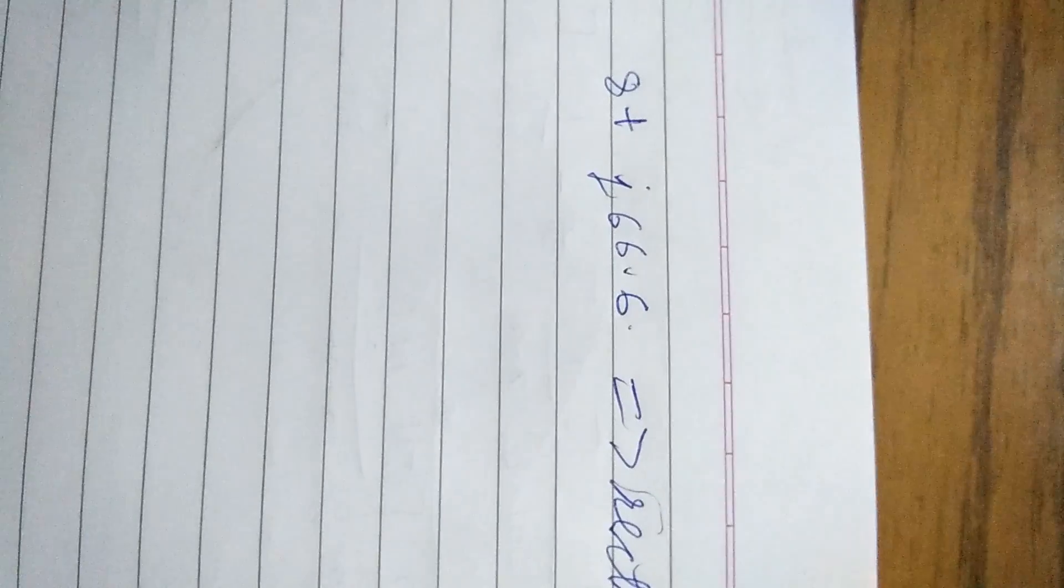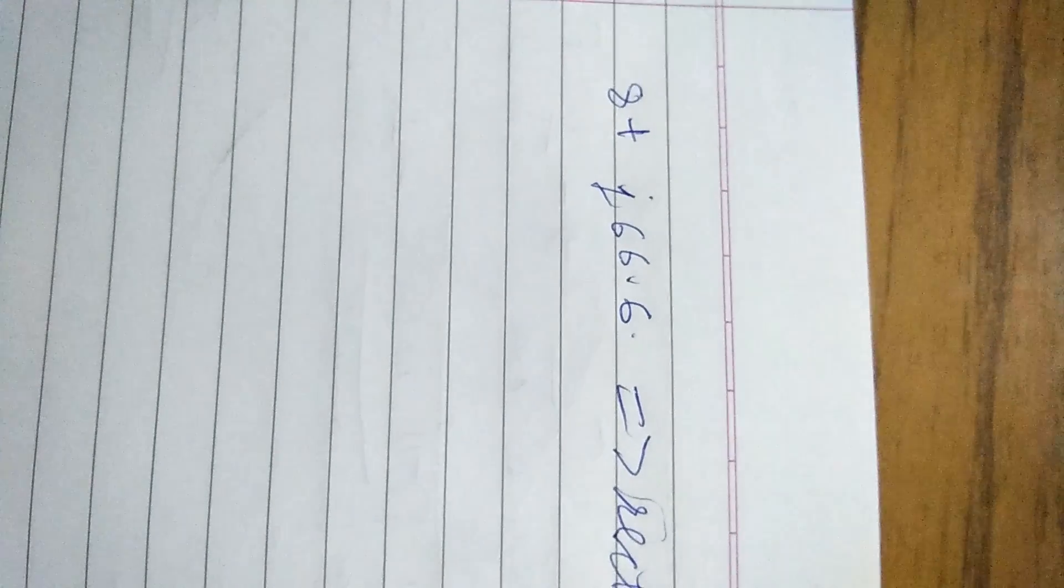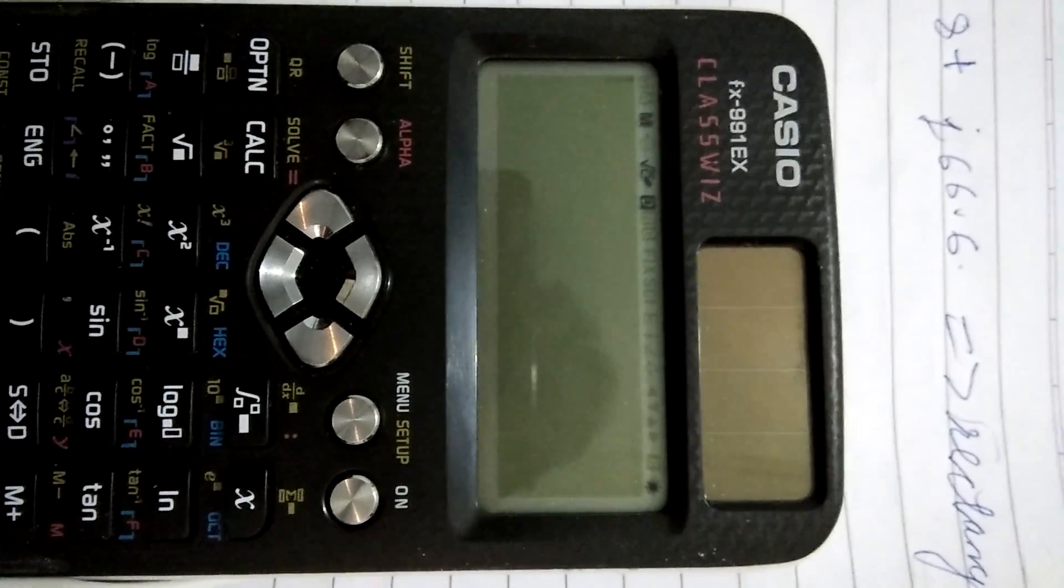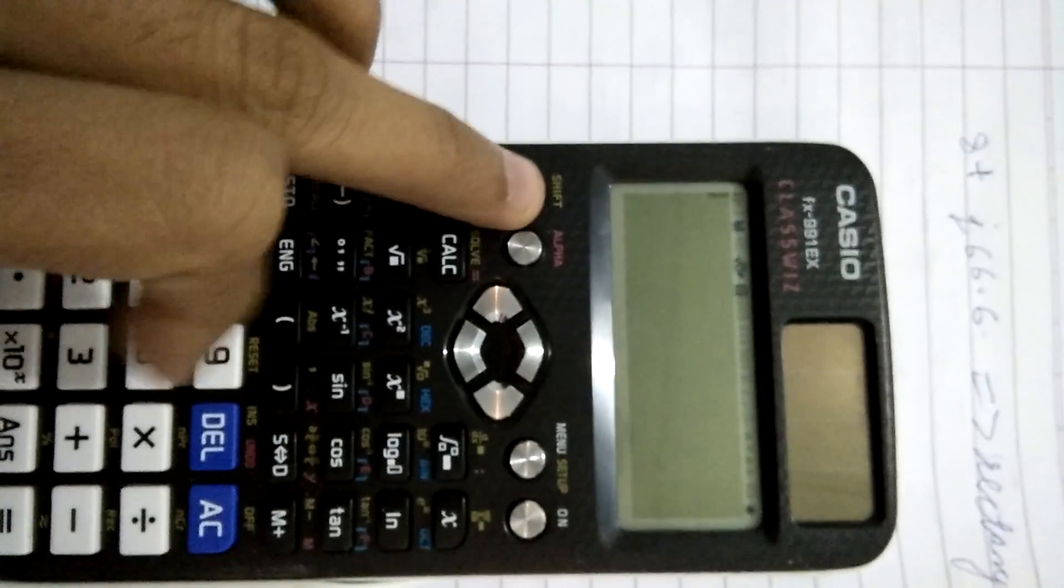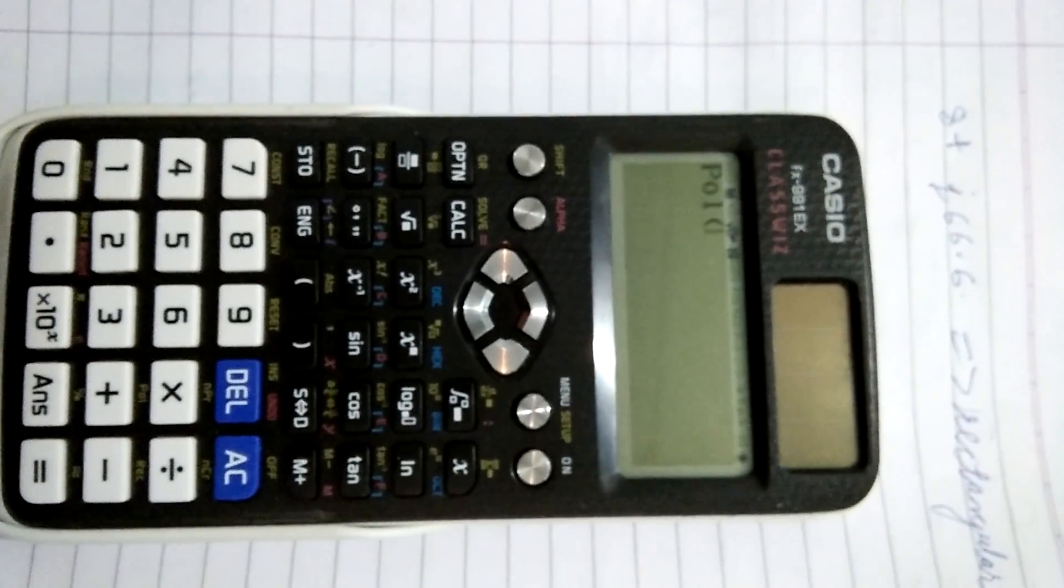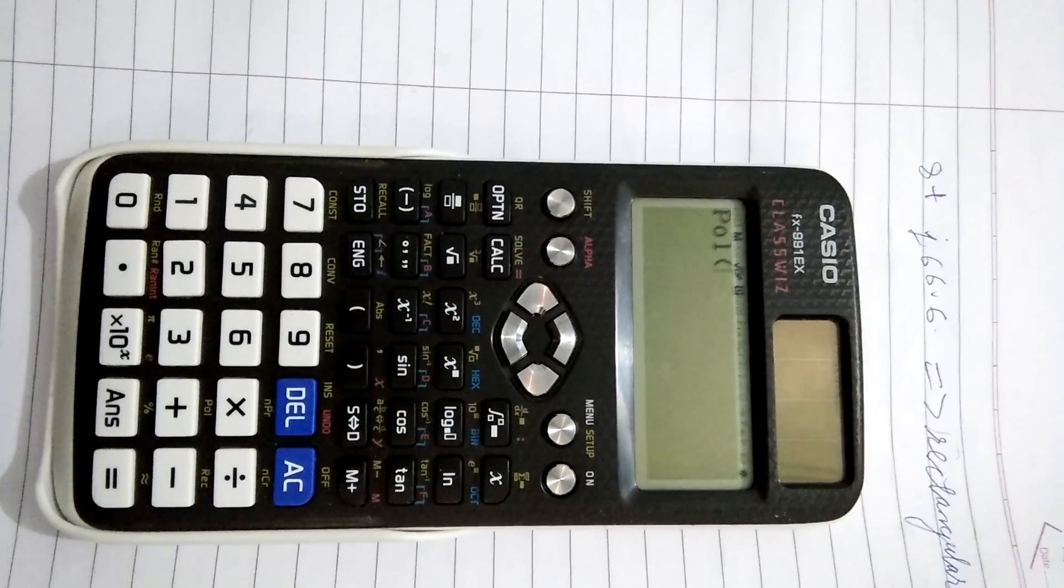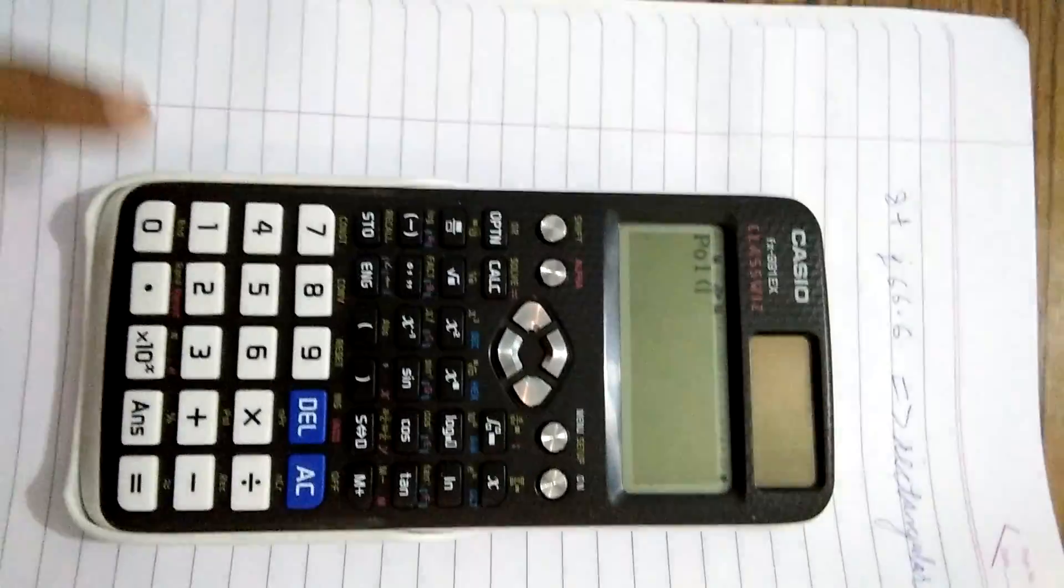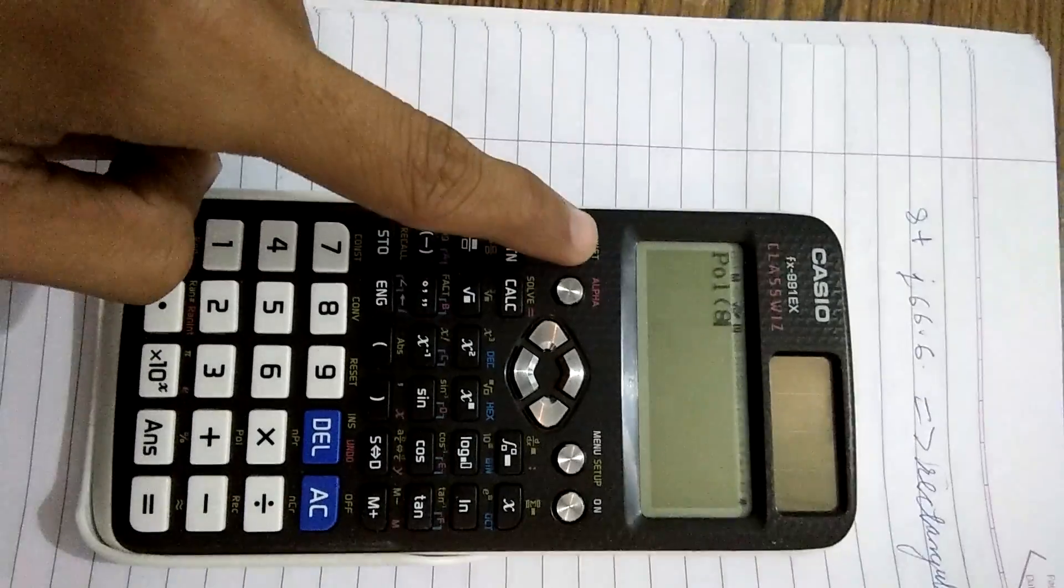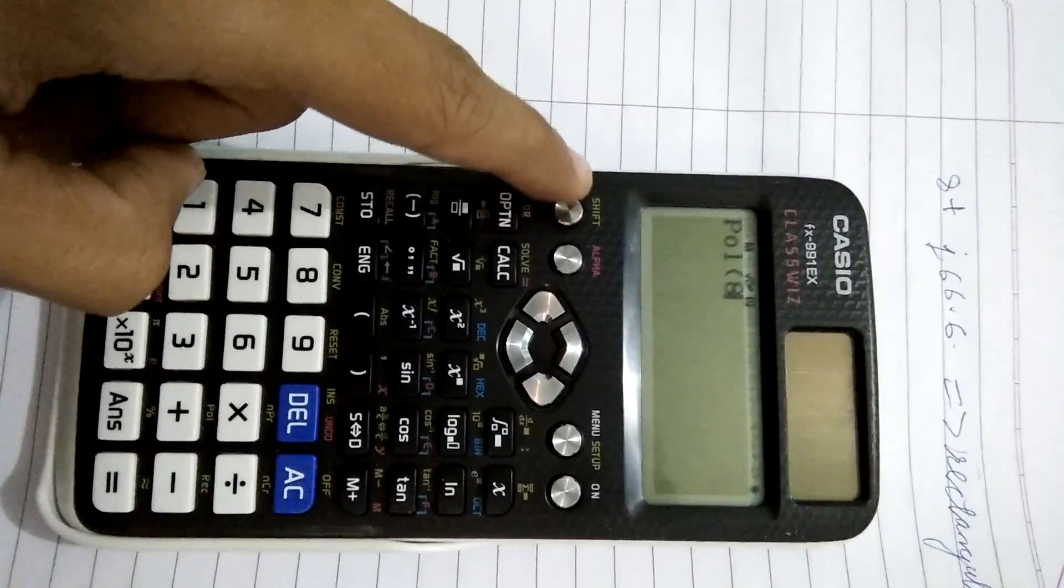Now take for example we have this rectangular form: 8 plus j66.6. To convert this into polar form on Casio model number FX991EX, we're going to press shift and the plus symbol. As soon as we do this, we can see POL displayed on the screen. Now simply press the coefficient of the numbers from your question.